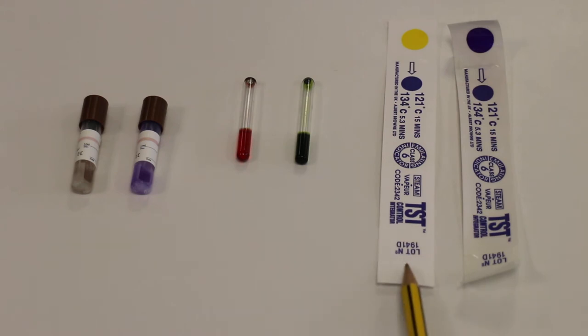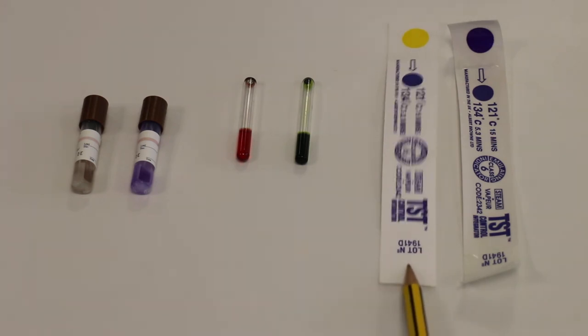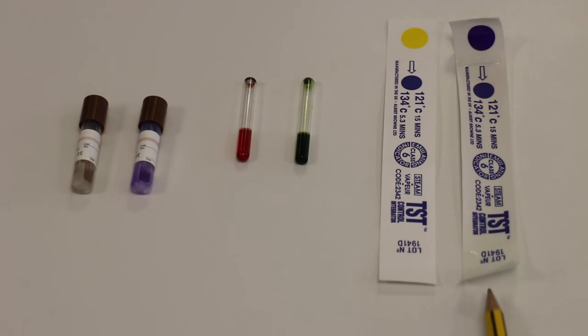For the paper strip, this was what it looked like before we put it in the autoclave and this was what it was like when it came out the other end. You can see the color of this circle has changed from yellow to blue, indicating that the autoclave has got up to temperature.